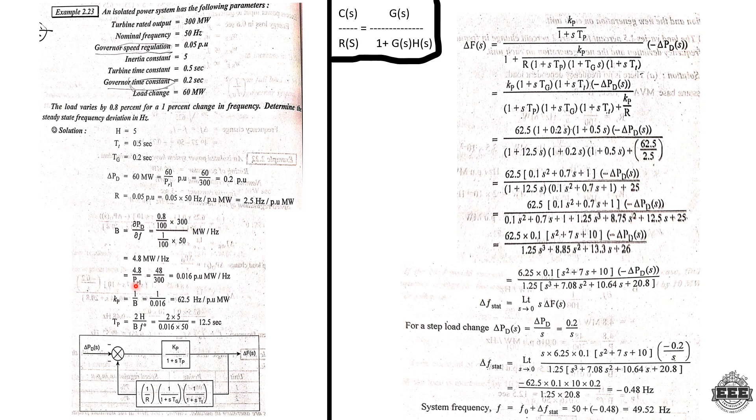The Kp value is 1/B, which gives 62.3 hertz per unit. Next, Tp is formed as 2H divided by (B × f0). Substituting H=5, giving Tp approximately 12.5 seconds.